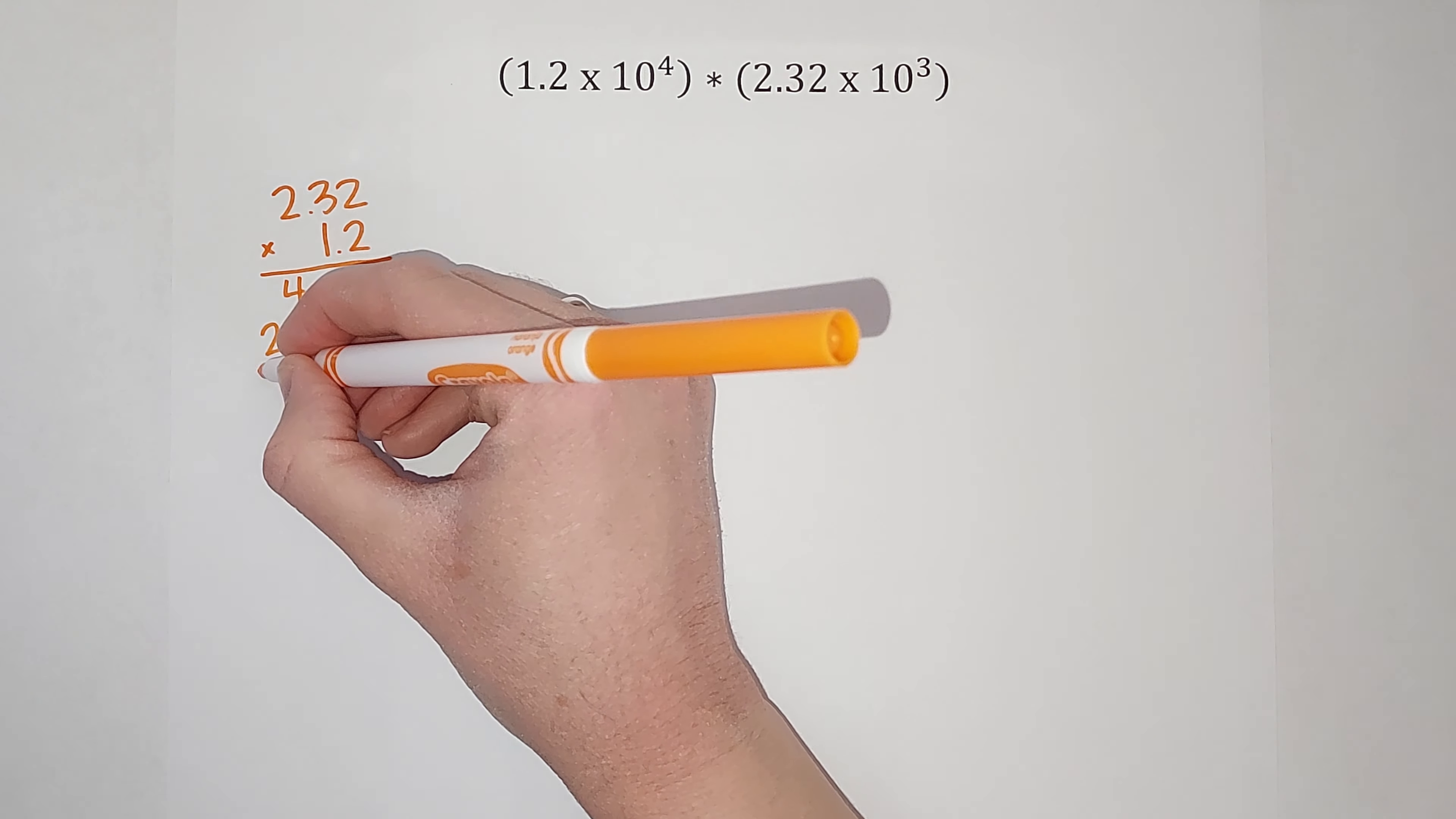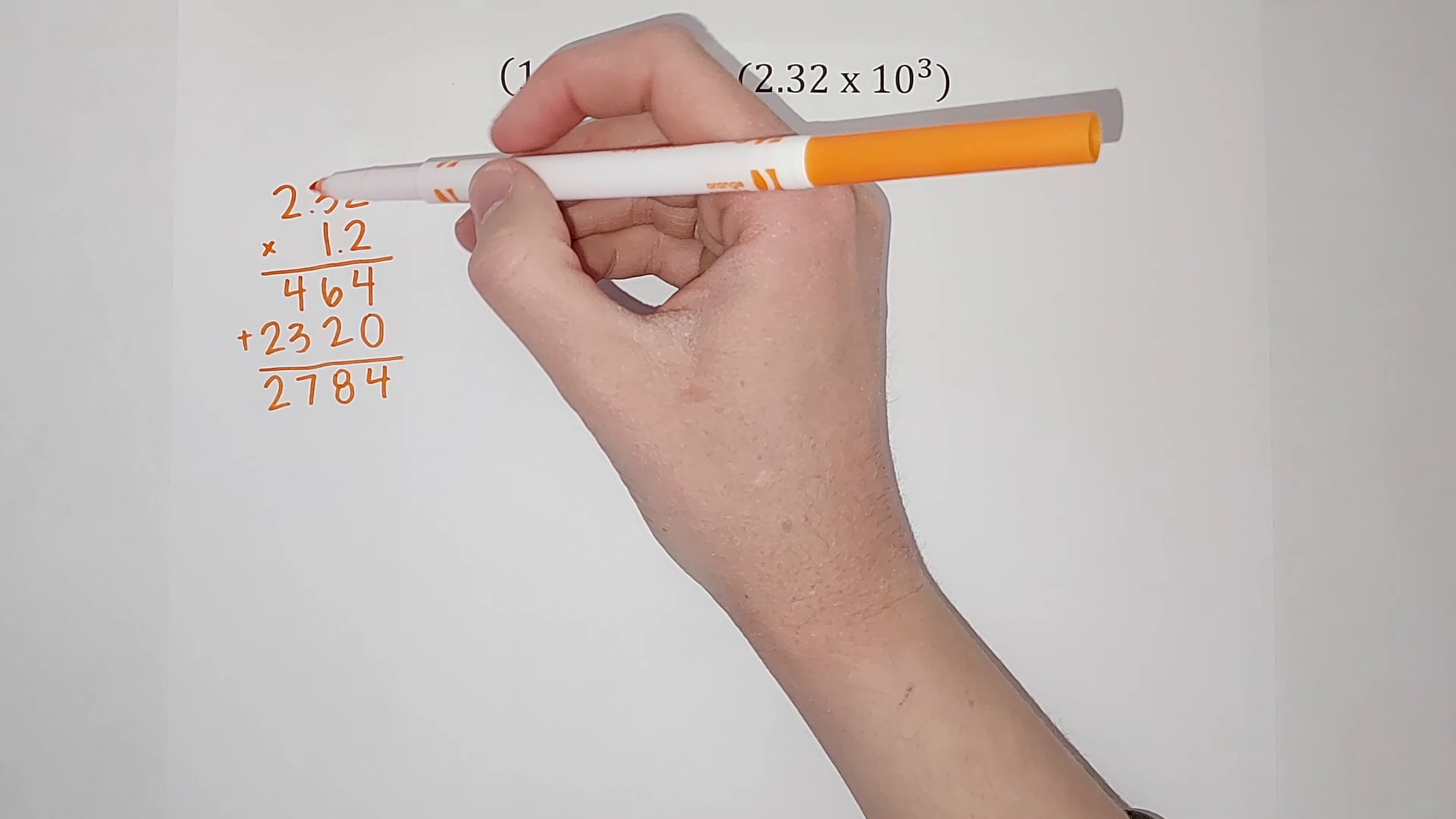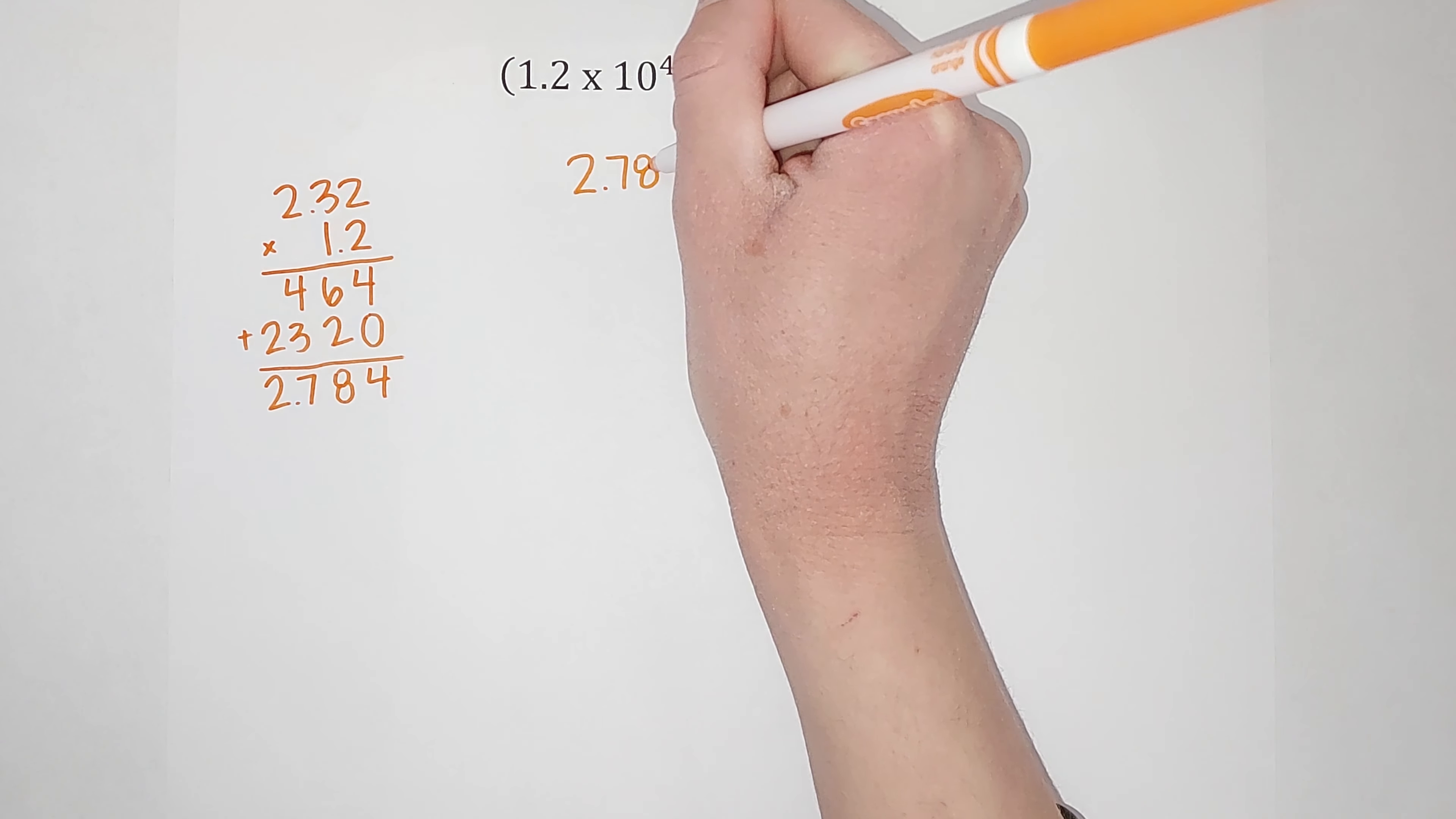Thank you for going on that beautiful journey with me. Alright, four plus zero gives me four, eight, seven, two. And then I count how many numbers are behind decimals here: one, two, three, one, two, three, and put my decimal there. So I have 2.784.